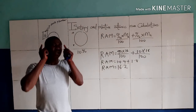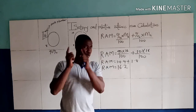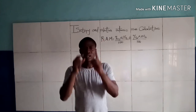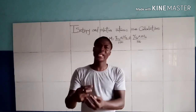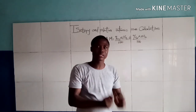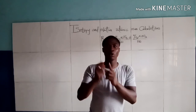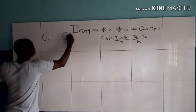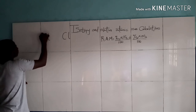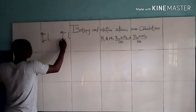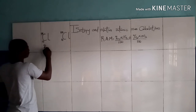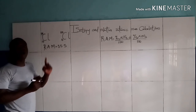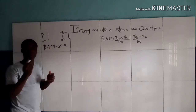It should be noted that the relative atomic mass of all elements are not whole numbers. Now let's go to the last question. In this question, we will not be asked to get the relative atomic mass, but rather to get the percent abundance of each isotope. The isotope we are going to use will be the isotope of chlorine. Chlorine has two main isotopes: Chlorine-35 and Chlorine-37. The relative atomic mass of chlorine is 35.5.